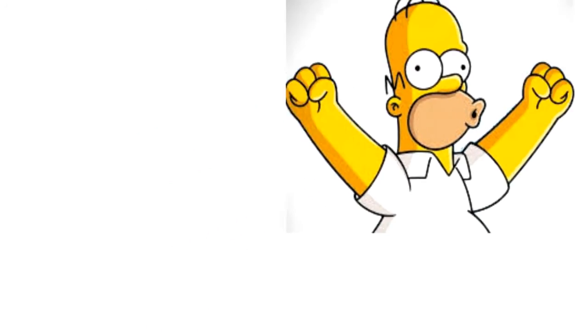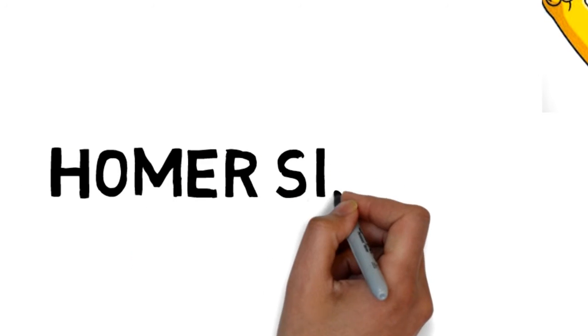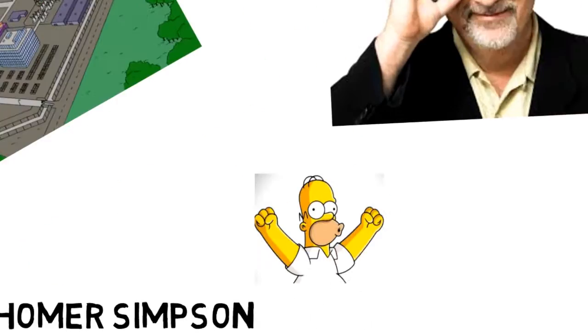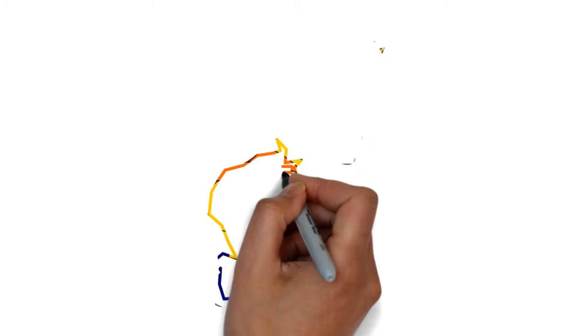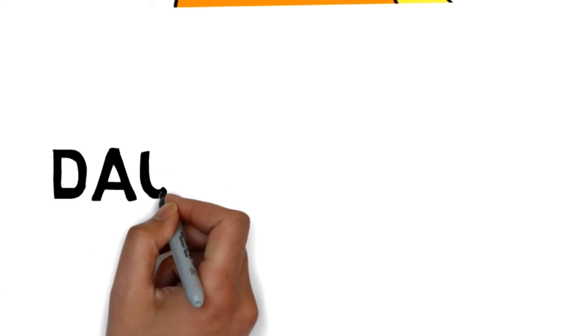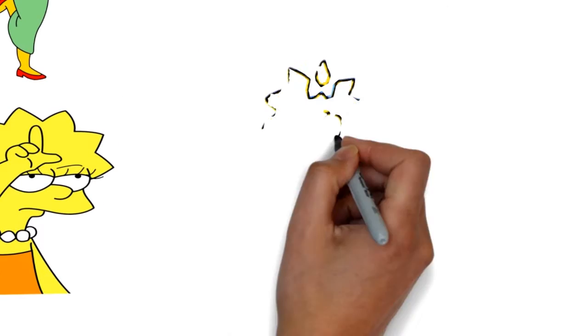The head of the Simpson family, Homer, is not a typical family man. A nuclear plant employee, he does his best to lead his family but often finds that they are leading him. The family includes loving blue-haired matriarch Marge, troublemaking son Bart, overachieving daughter Lisa, and baby Maggie.